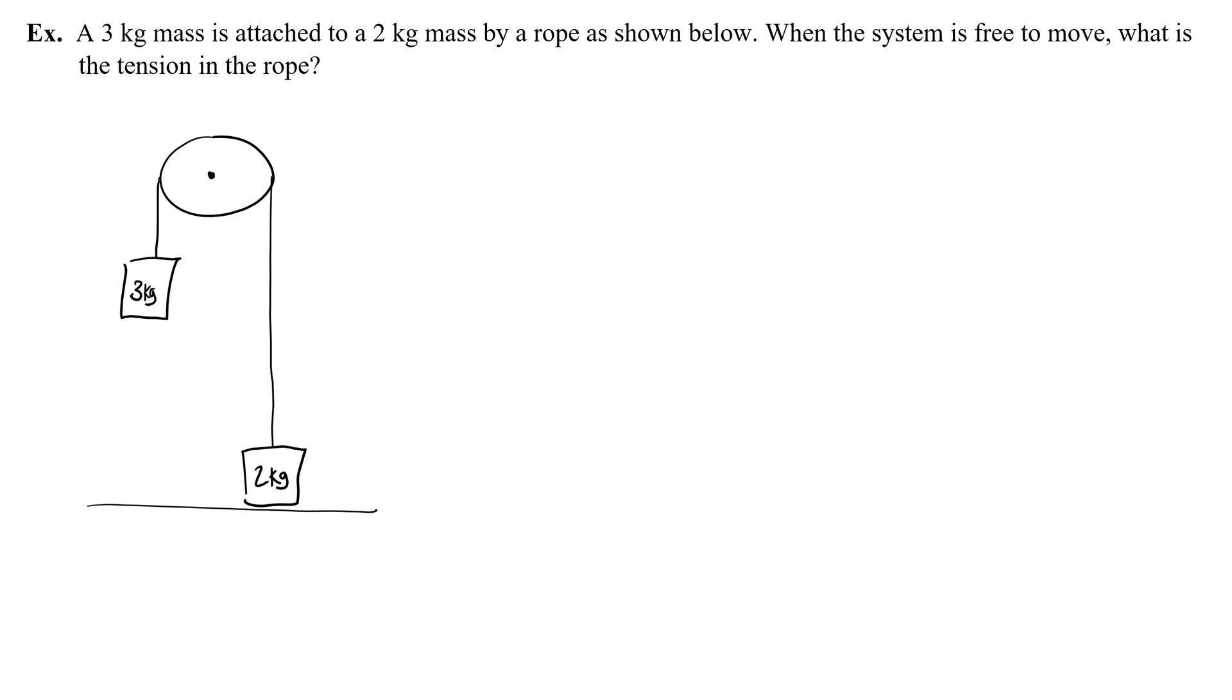So now let's take a look at an example problem. A three kilogram mass is attached to a two kilogram mass by a rope as shown below. When the system is free to move, what is the tension in the rope? So this is just a simple Atwood's machine. We have two masses attached by a rope over a pulley. And when the system is free to move, that means like if you're maybe holding that two kilogram mass and then you let go.